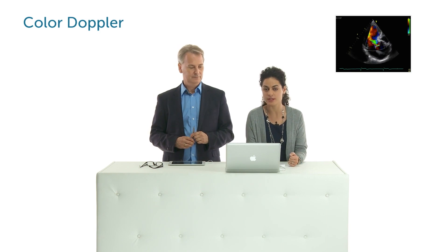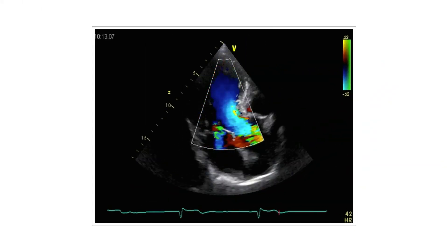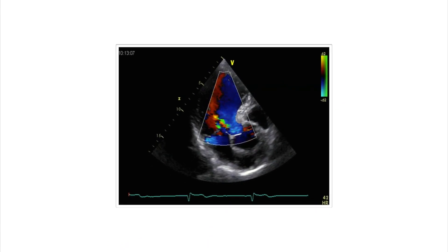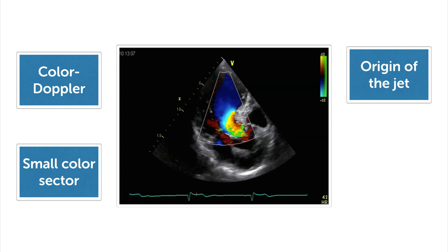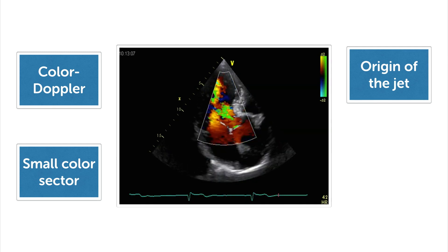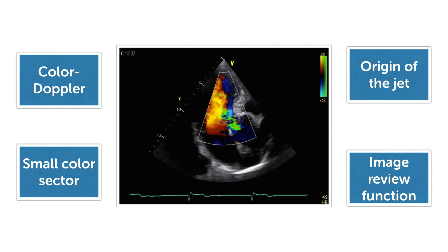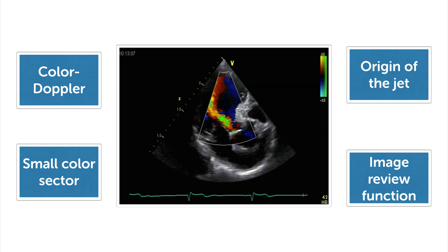How do we detect AR? With color Doppler. Like we do with mitral regurgitation, we have a JET, but here it is originating from the aorta and goes through the aortic valve into the left ventricle. When using color Doppler, a few tips: make sure the color sector is small, try to always visualize the origin of the JET — which is more difficult than for mitral regurgitation — and use the image review function. Freeze your image and scroll it back and forth to analyze the JET completely.